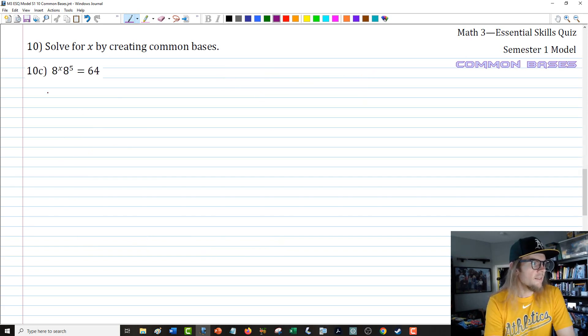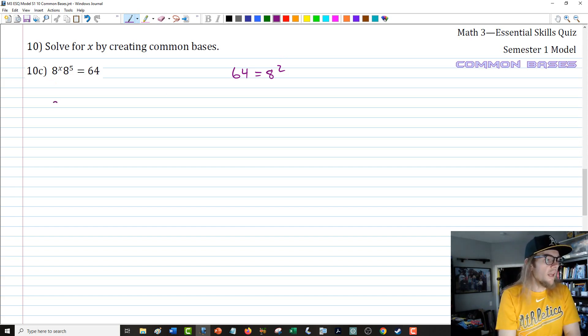The next one is 10c. We have 8 to the x times 8 to the fifth equals 64. In this one, you have a couple different options. What I'm noticing is that 64 is equal to 8 squared. Seeing all those 8s on the left side, my thought is let's break this down into powers of 8.